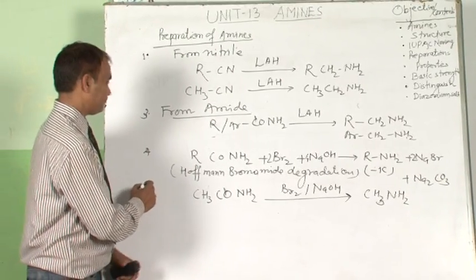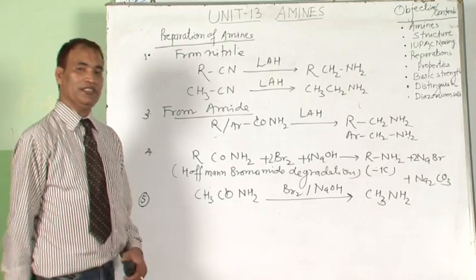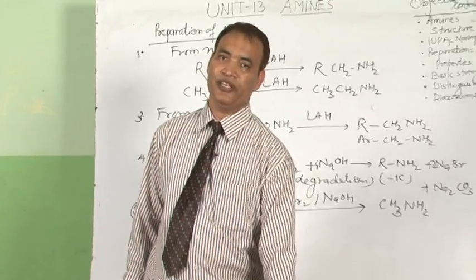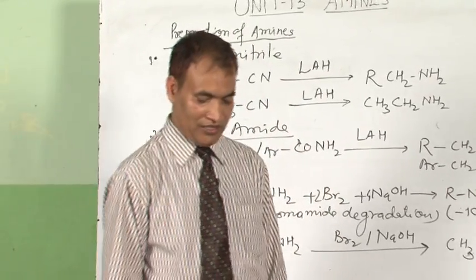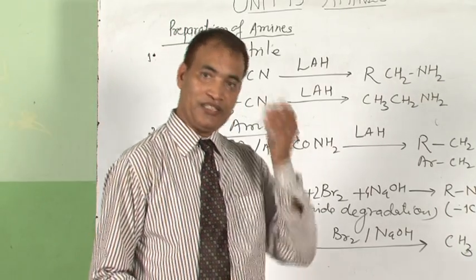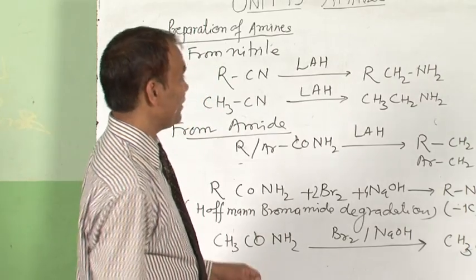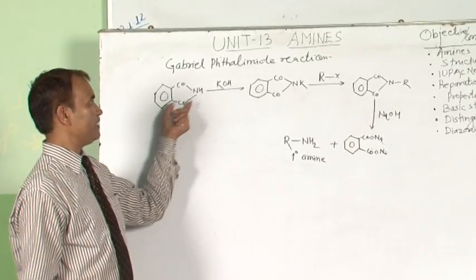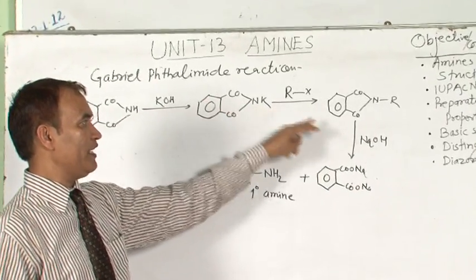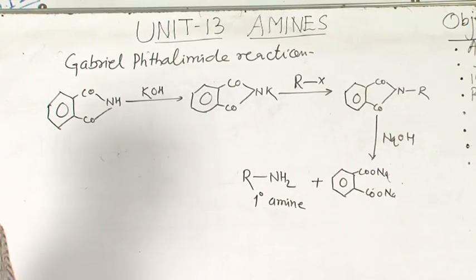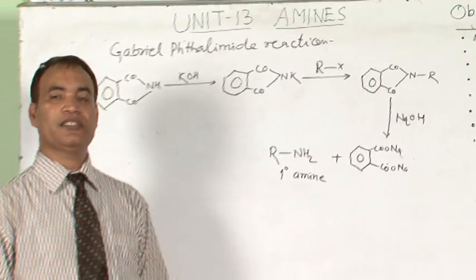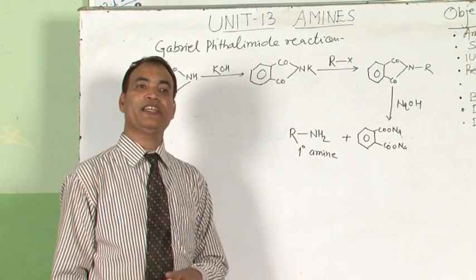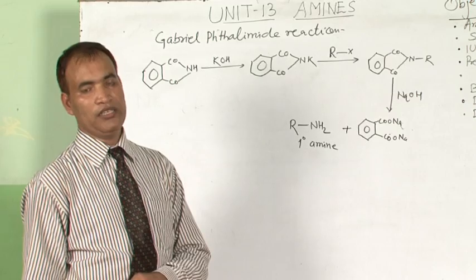The next method is Gabriel phthalimide synthesis. Gabriel phthalimide synthesis is for the preparation of aliphatic primary amines only, not for aromatic amines. Phthalimide reacts with KOH, followed by alkyl halide and hydrolysis, to give the primary amine. This reaction is known as Gabriel phthalimide synthesis and is applicable only for the preparation of aliphatic primary amines.